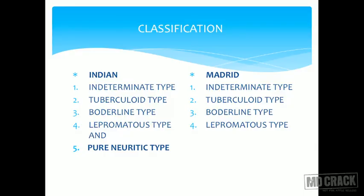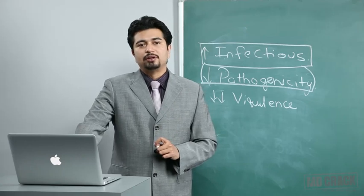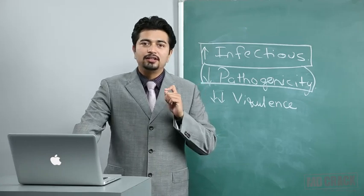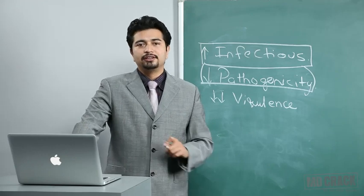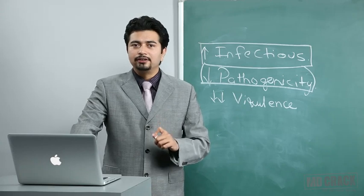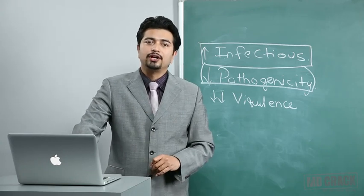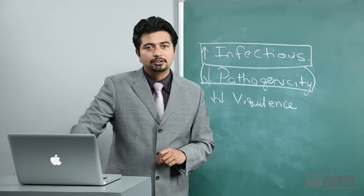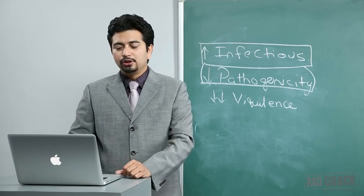The classification of leprosy includes the Indian classification and the Madrid classification. Both have intermediate, tuberculoid, borderline, and lepromatous types. The Indian classification additionally includes the pure neurotic type — a type wherein only a single nerve is involved with no other clinical features. A single nerve is thickened and no other problem is present.